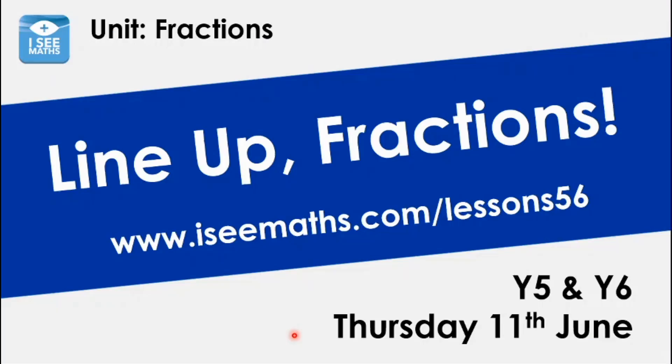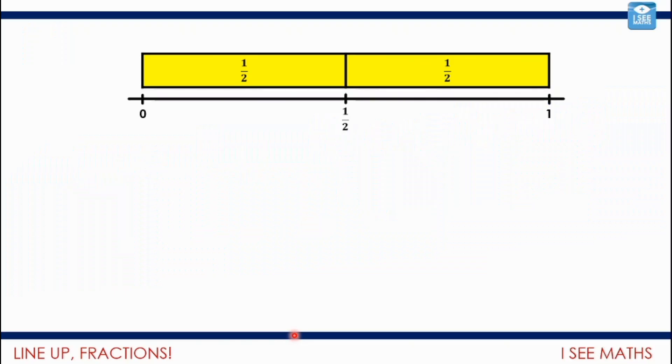So yesterday our emphasis was finding fractions of shapes. Today it's looking at finding position of fractions on number lines and then relating that to decimals. So I've called this one "Line Up Fractions." Now, finding fraction and decimal equivalence is something that's difficult to master, but some of you might have already understood that. And if you have, follow along with the video, but your real challenge will come at the end. I've got a how many ways challenge for you on the independent task, which I'm really looking forward to getting to. Now let's see if we can build understanding.